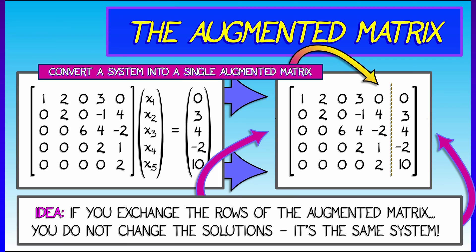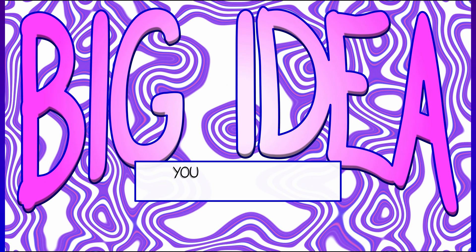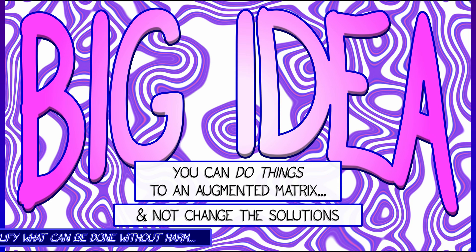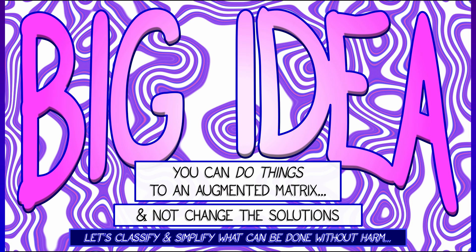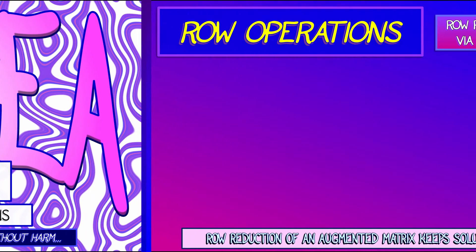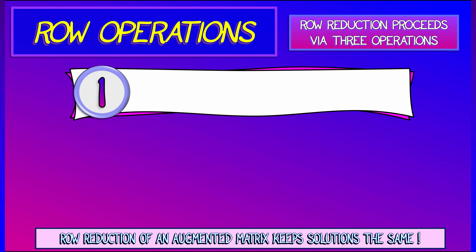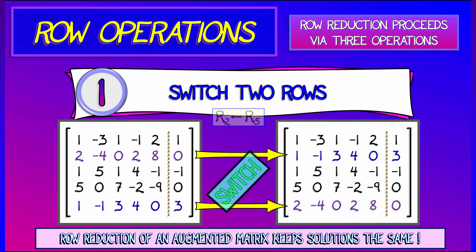Switching rows is not the only thing that you could do. Notice that the third equation in the system has all coefficients even, so we could divide both sides by two — that corresponds to multiplying that third row by one half. Doing things to an augmented matrix while keeping the solutions the same is critical. There are three such operations called row operations. The first one is switching of two rows.